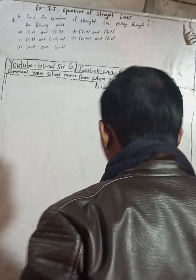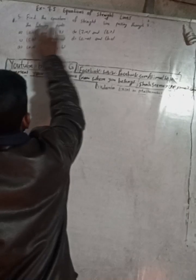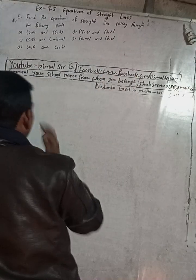Hi class 9 and 10 students, welcome back to our Bimal Surgy's YouTube channel. In this chilly cold season, I am here to warm up your days and nights with exciting content. Let's make it a little warmer with mathematical solutions for class 9 and 10. The question is number 5: find the equation of a straight line passing through the following points. There are five sub-questions I will solve one by one.